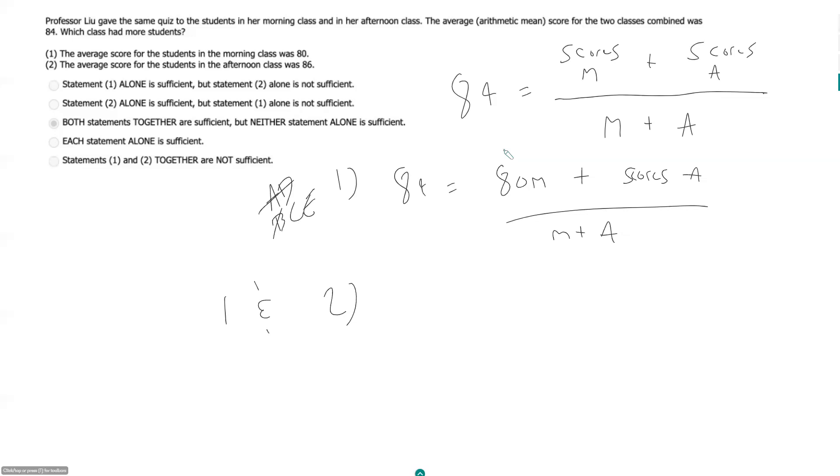Now together we can do two things. You can just sort of think about this. Say our classes had the same number of students. That means each class, if we think of this as a weighted average, each class is weighted equally. And the average score for the two classes should just be the simple average, which would give us an average of 83.